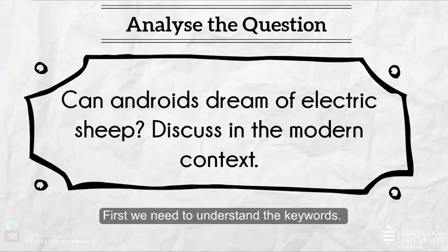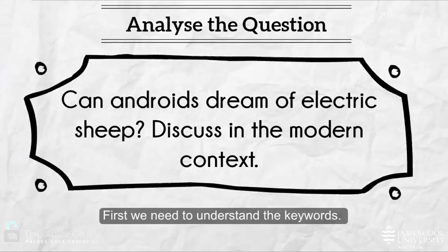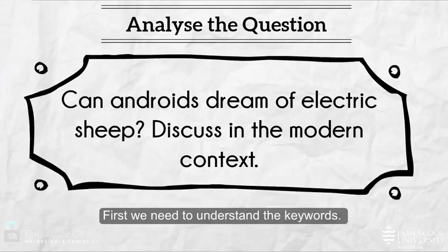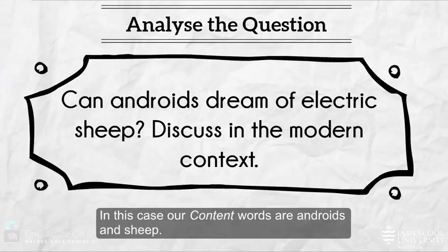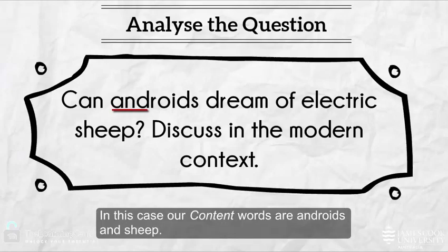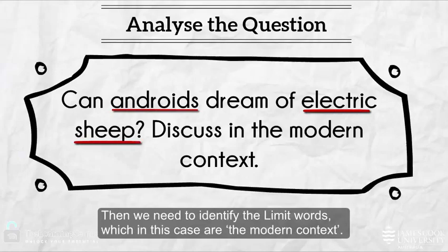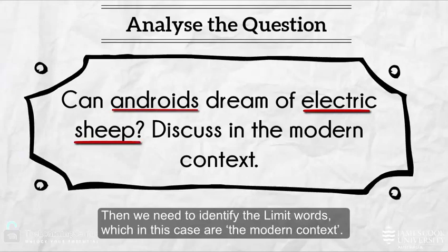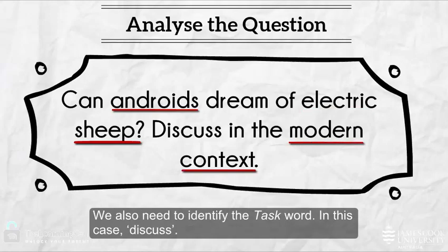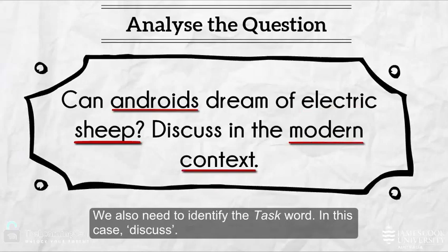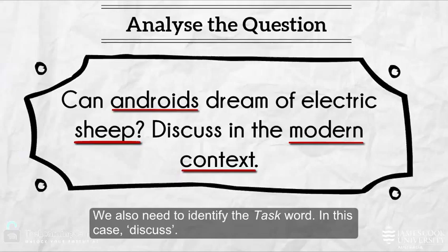The next step is to analyse the essay question. First, we need to understand the key words. In this case, our content words are androids and sheep. Then we need to identify the limit words, which in this case are the modern context. We also need to identify the task word, in this case, discuss.